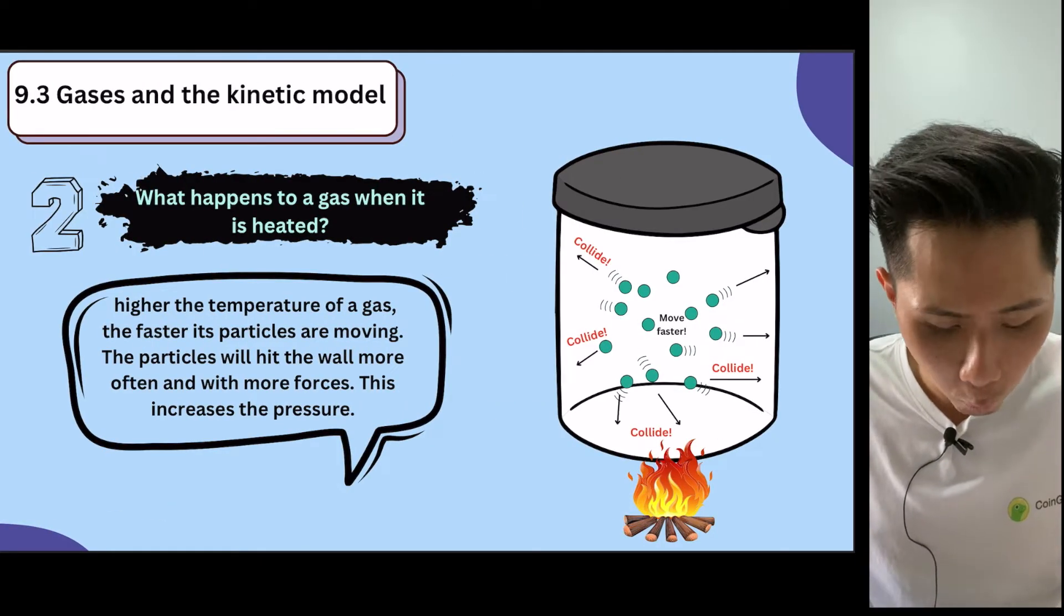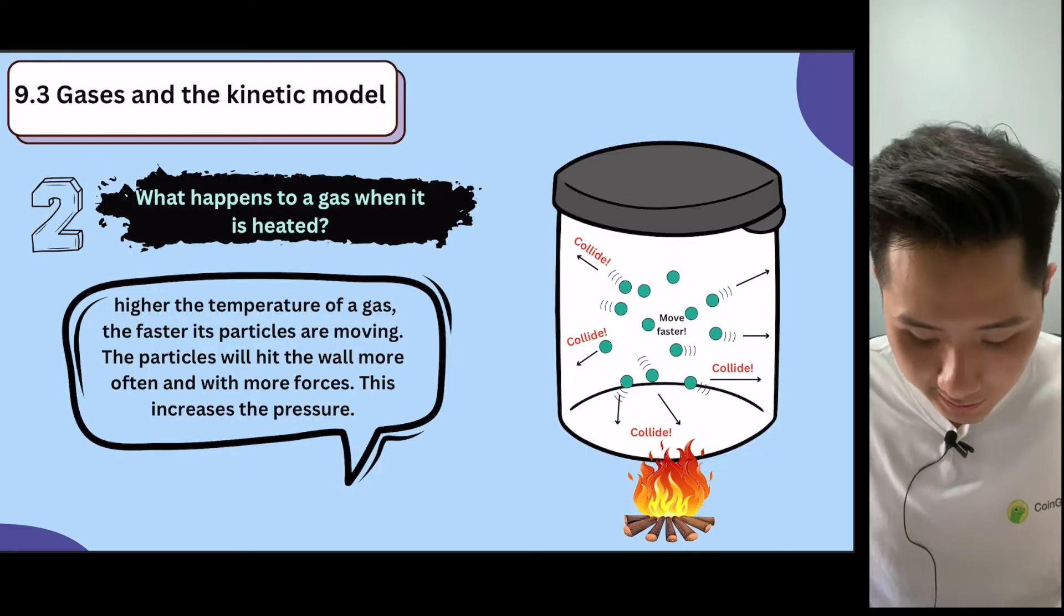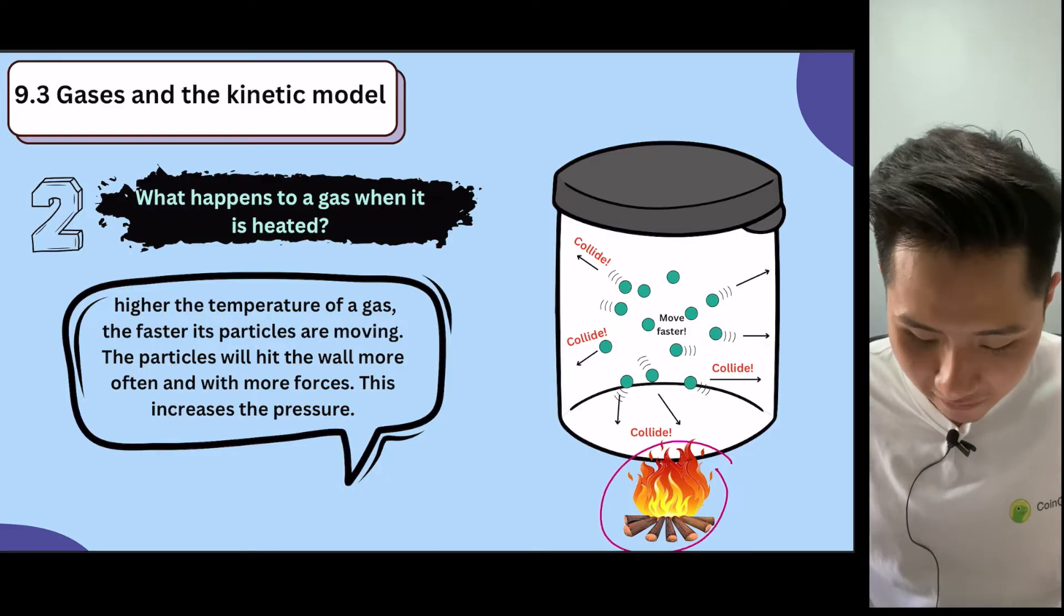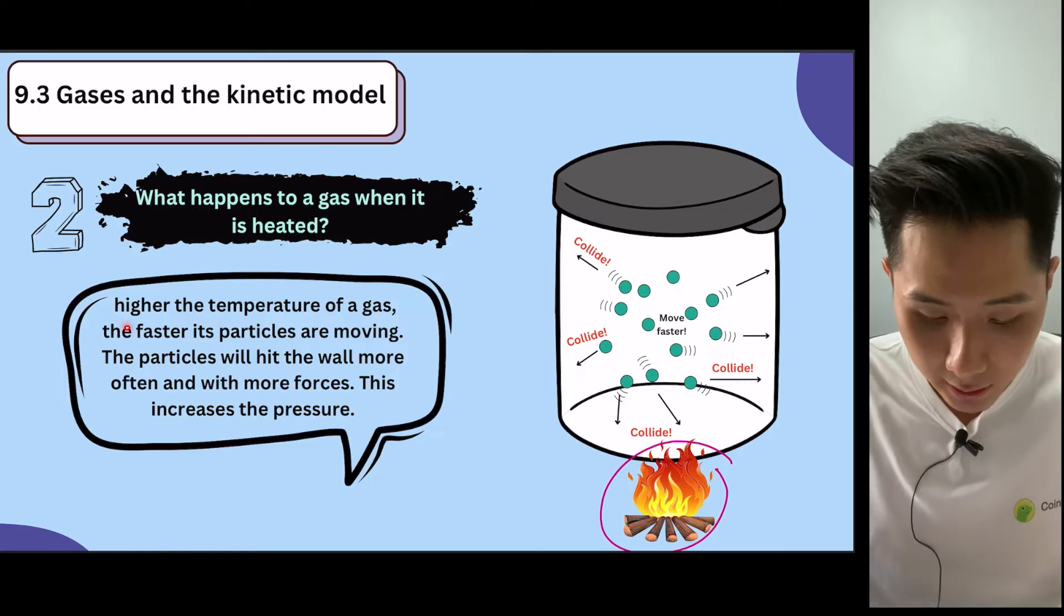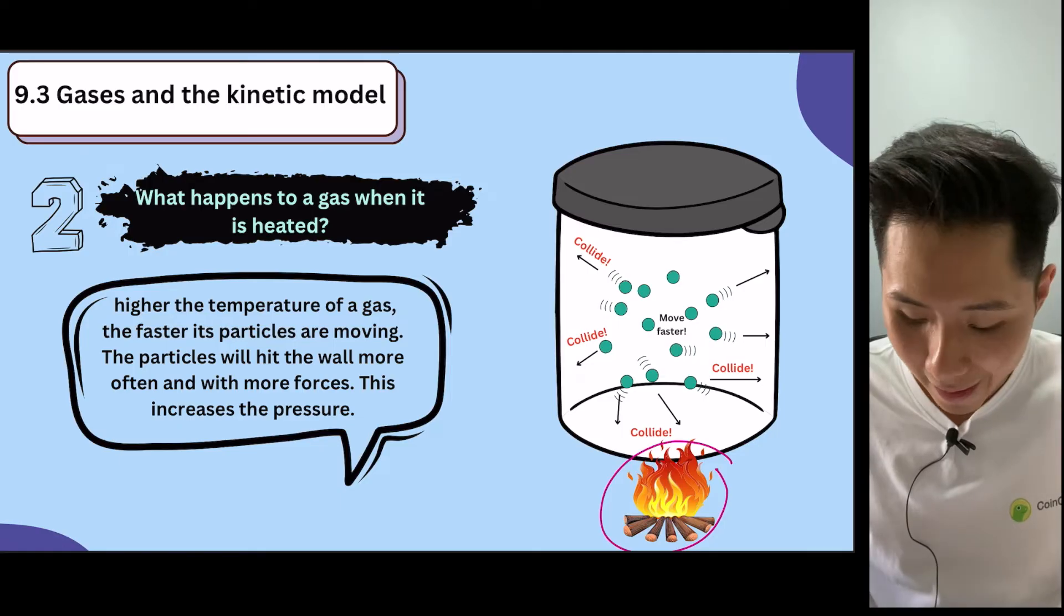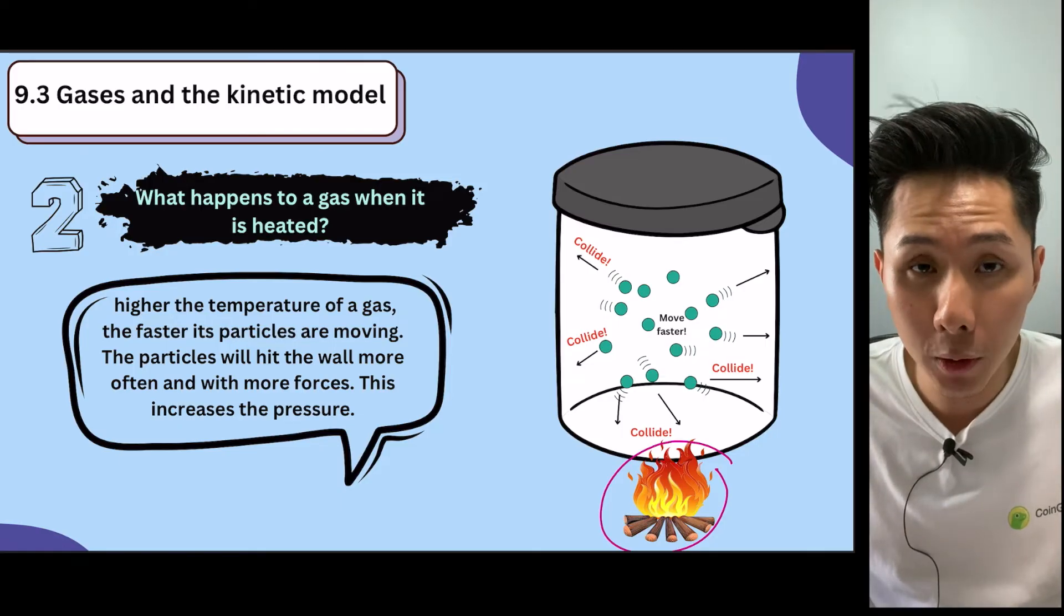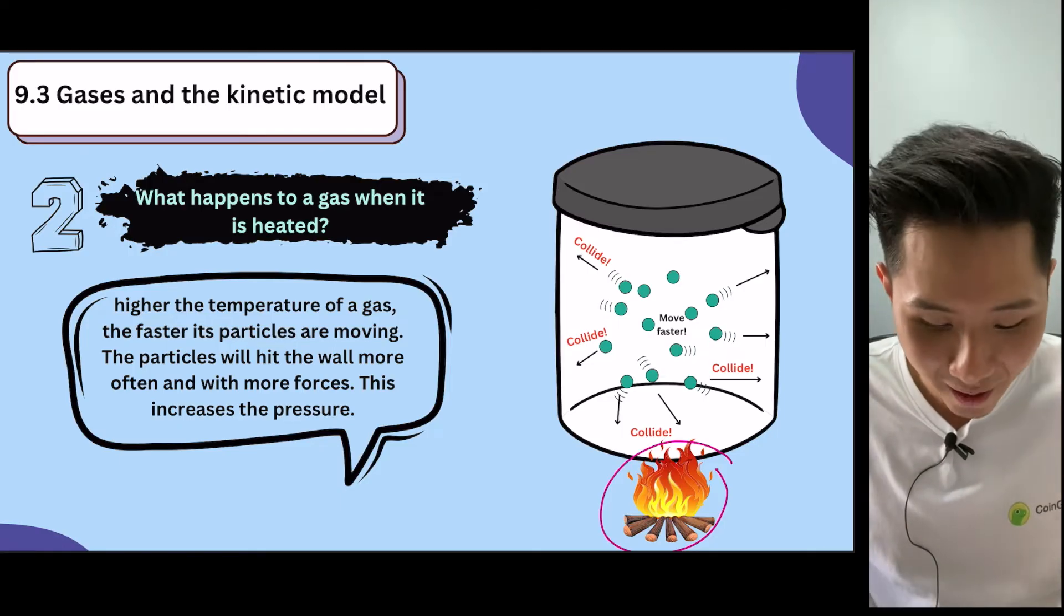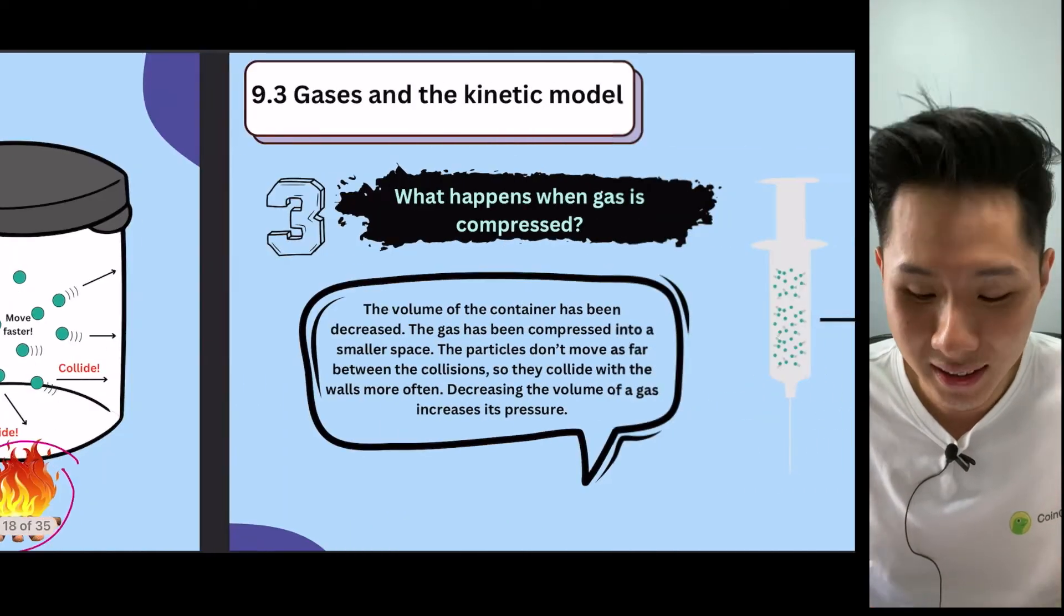Second question about the gas: what happens to a gas when it is heated? So let's say I put a fire under this container. The higher the temperature of the gas, we know that the faster the particles will move. And as a result, these gas particles will hit the wall more often, which results in higher pressure.